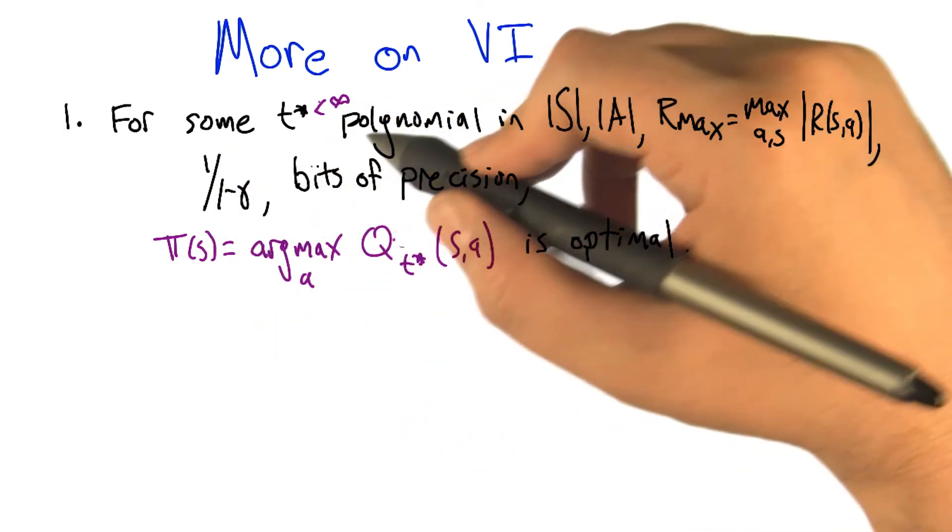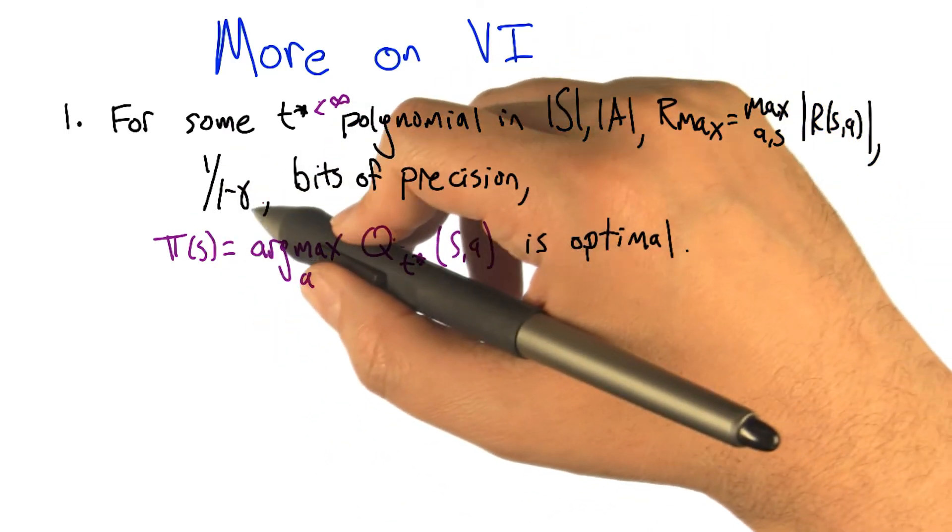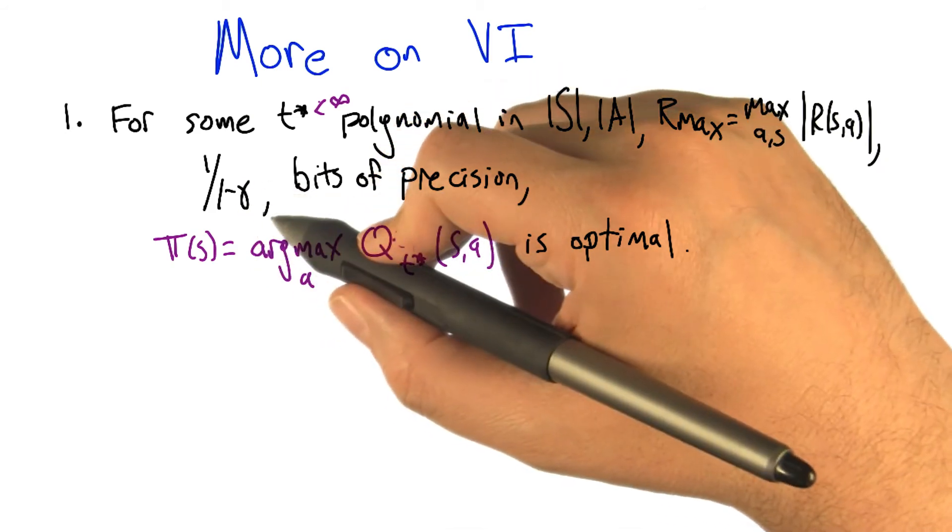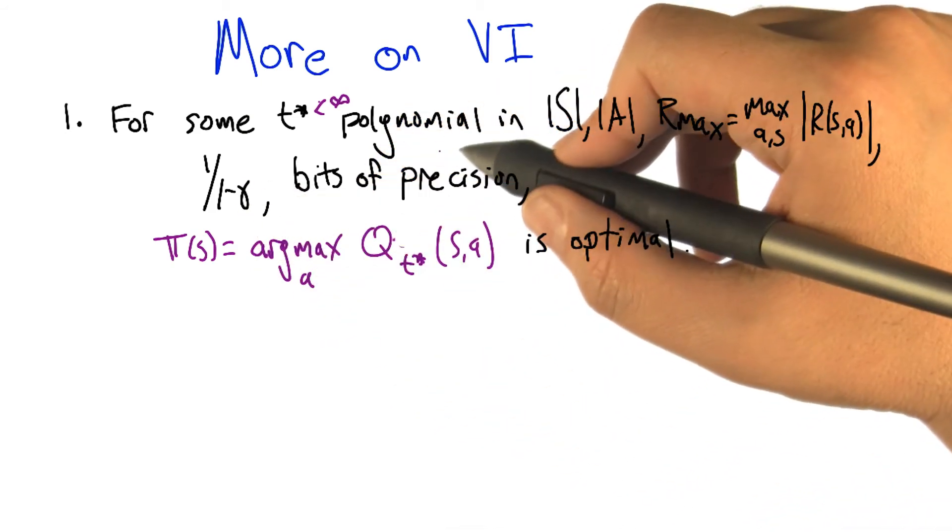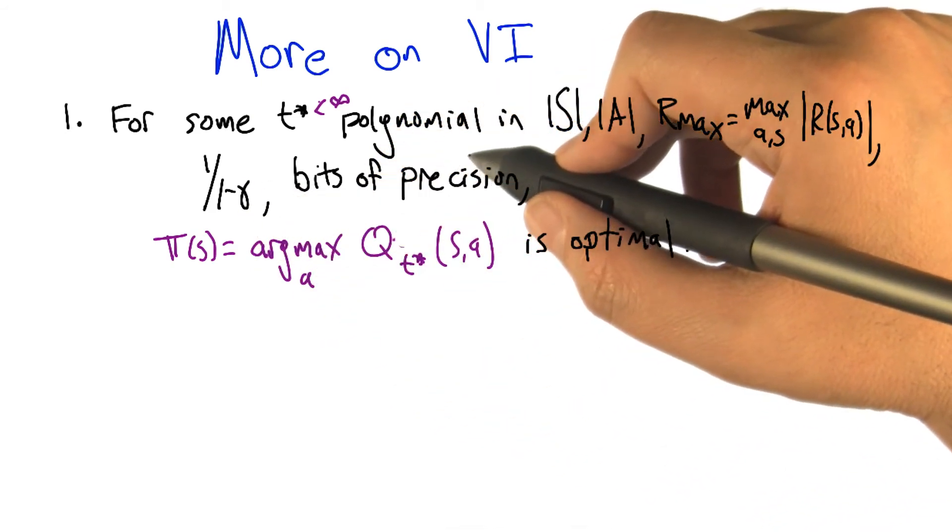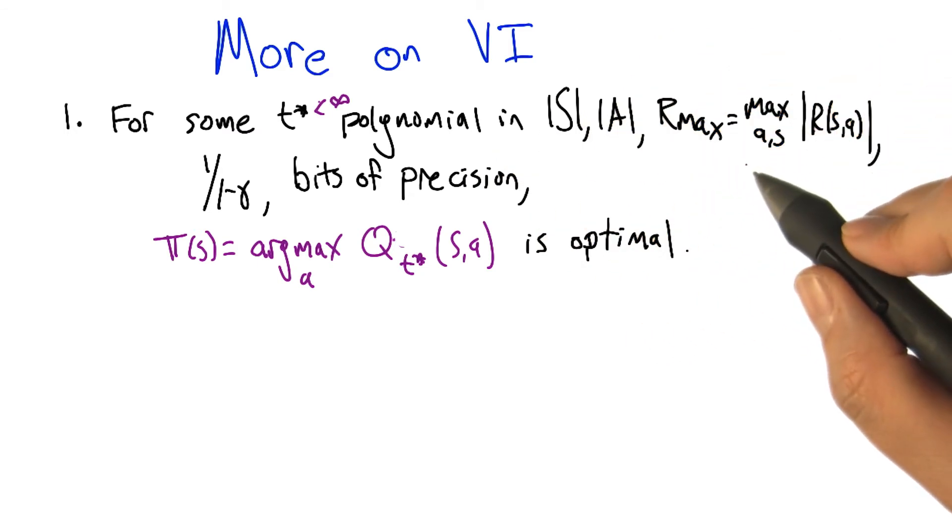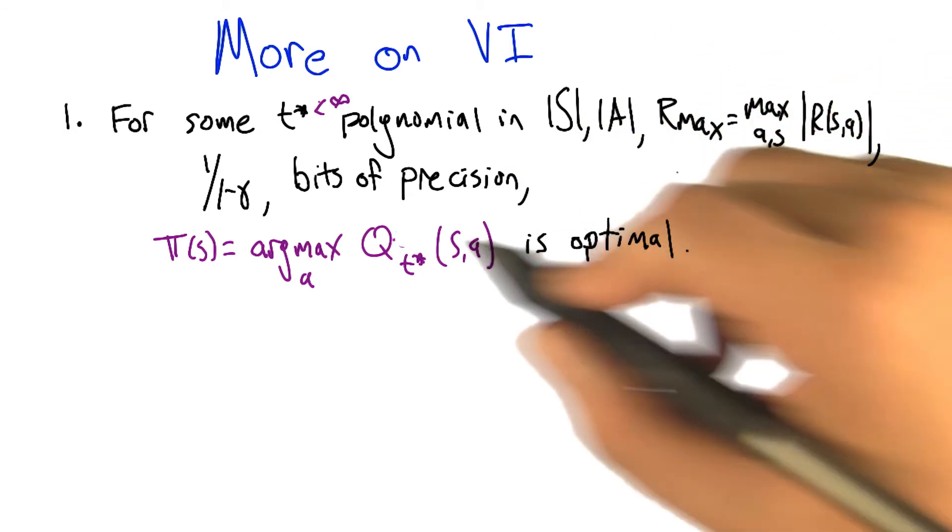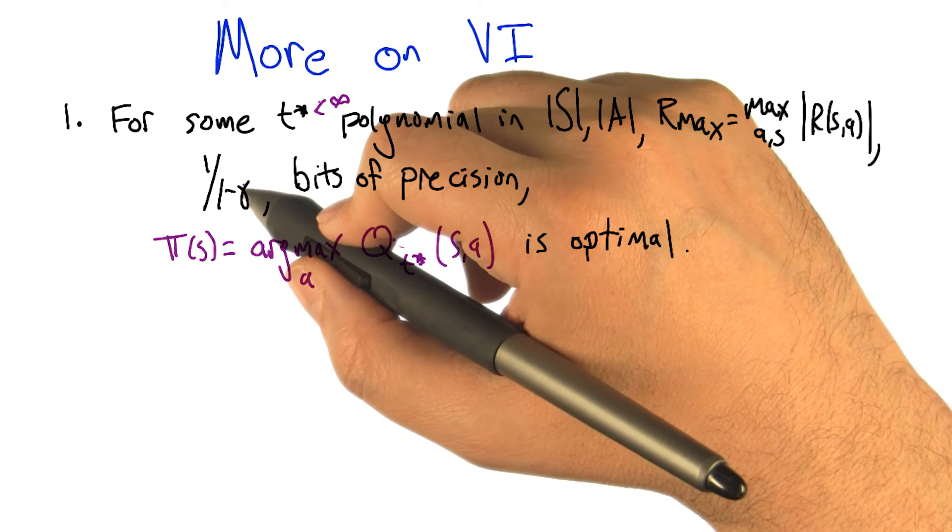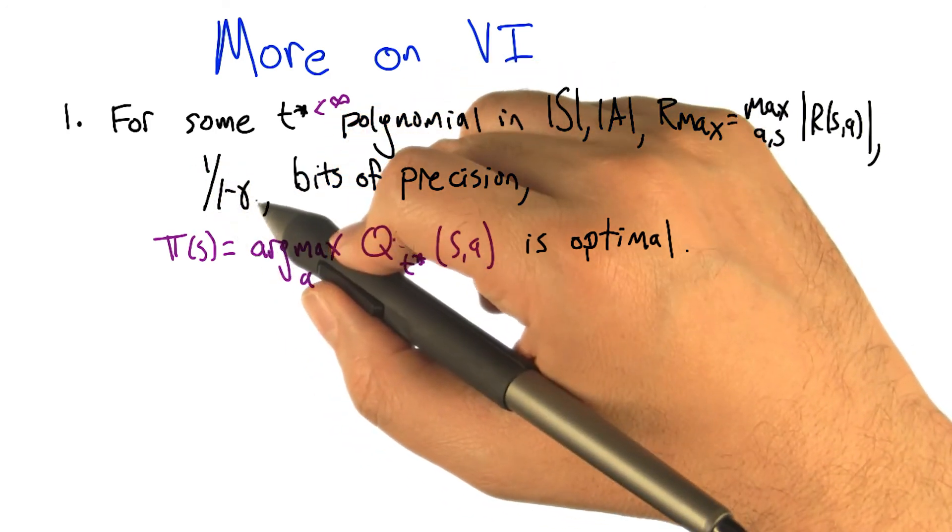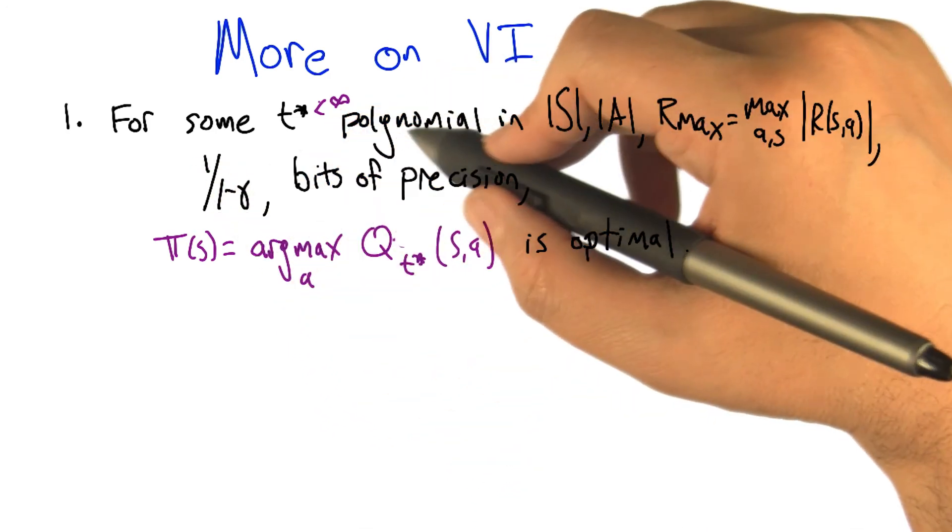And that's not polynomially bounded in the number of bits it takes to write down gamma. So it really is exponential in terms of the number of bits it takes to write down the whole problem. But even so, if you take gamma to be some fixed constant, then 1/(1-γ) might be really big, but it's some fixed constant. And we're polynomial in all the rest of this stuff.